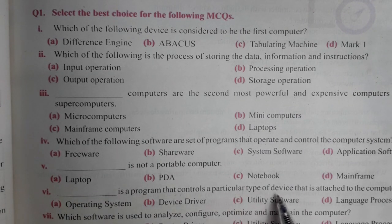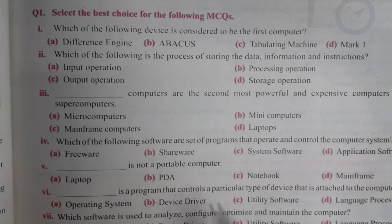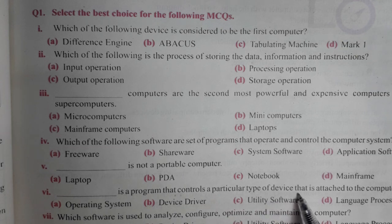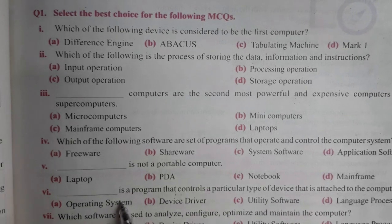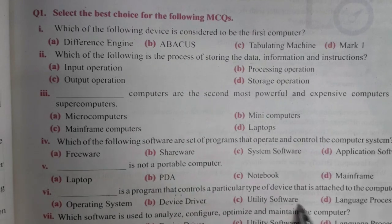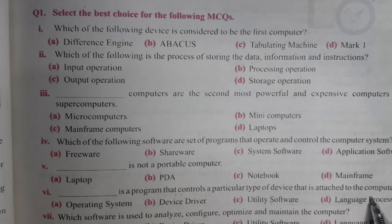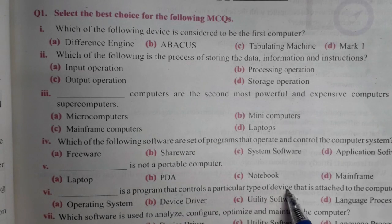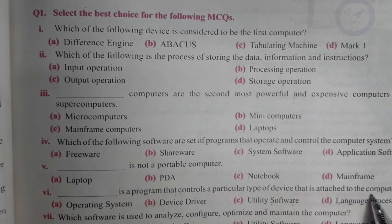Dash is a program that controls a particular type of device that is attached to the computer. وہ program جو کسی خاص device کو control کرتا ہے وہ کیا کہلاتا ہے؟ Options: operating system, device driver, utility software, language processor. The correct answer is device driver — it is the program for a particular type of device attached to the computer.